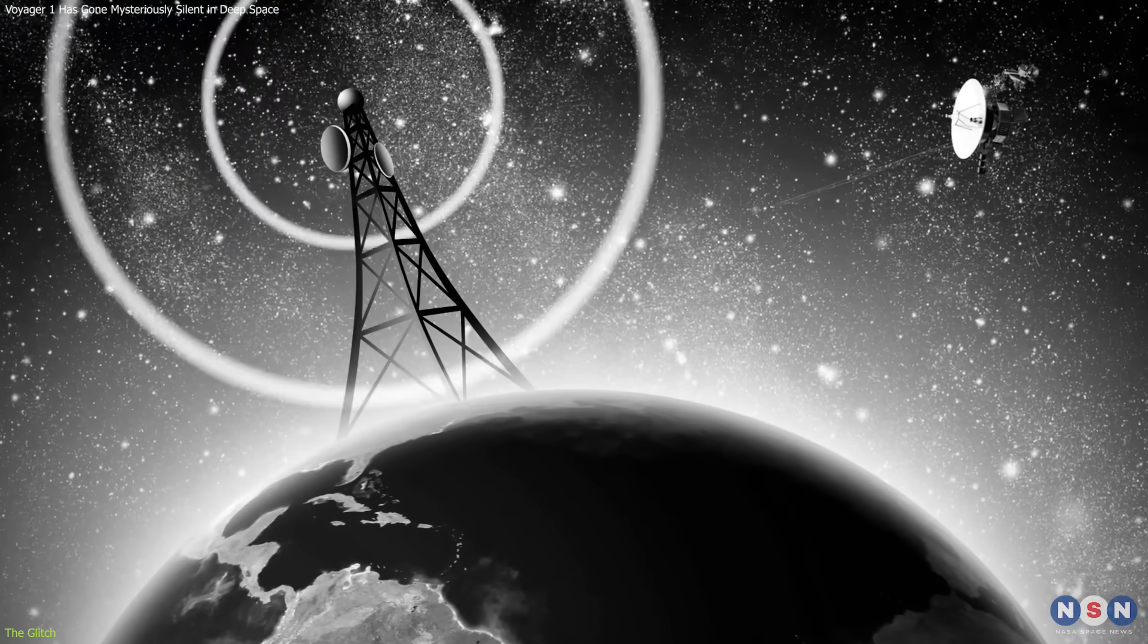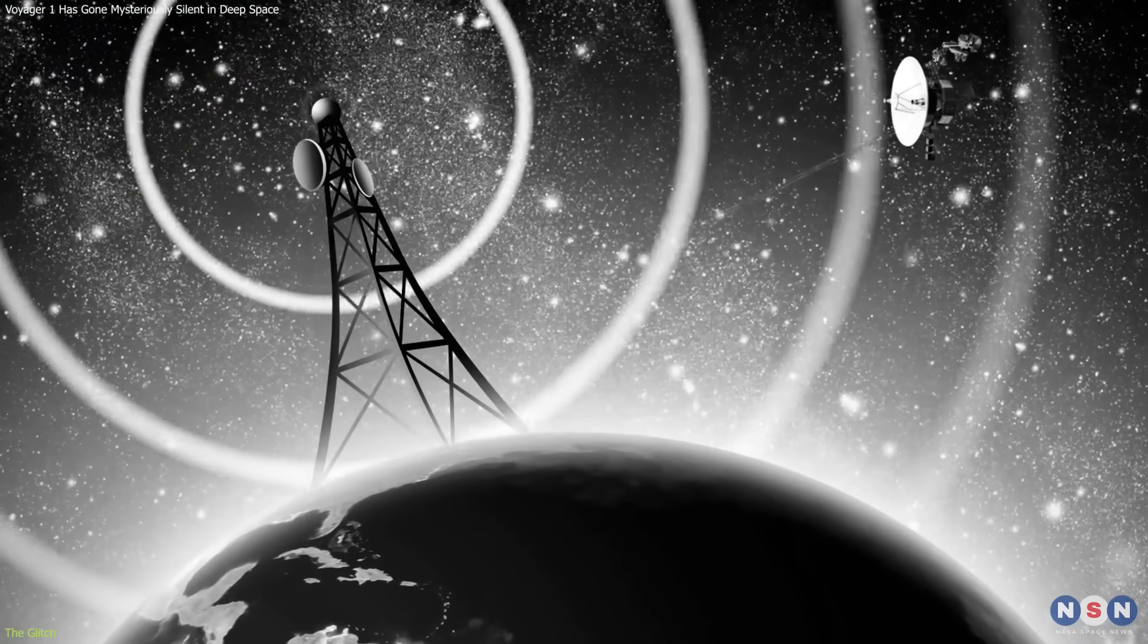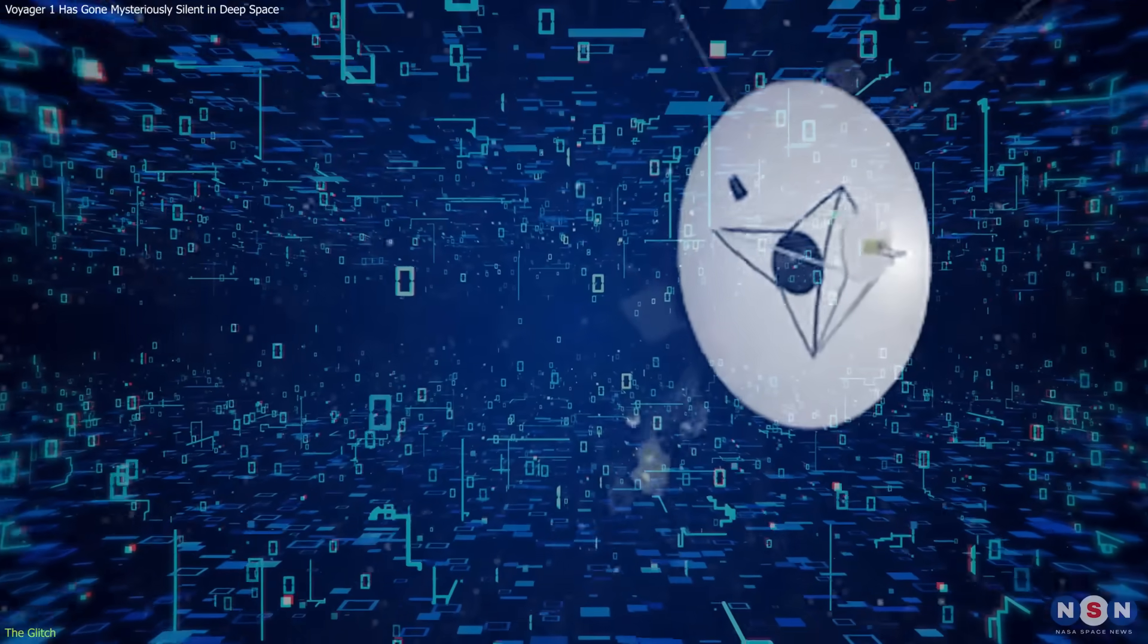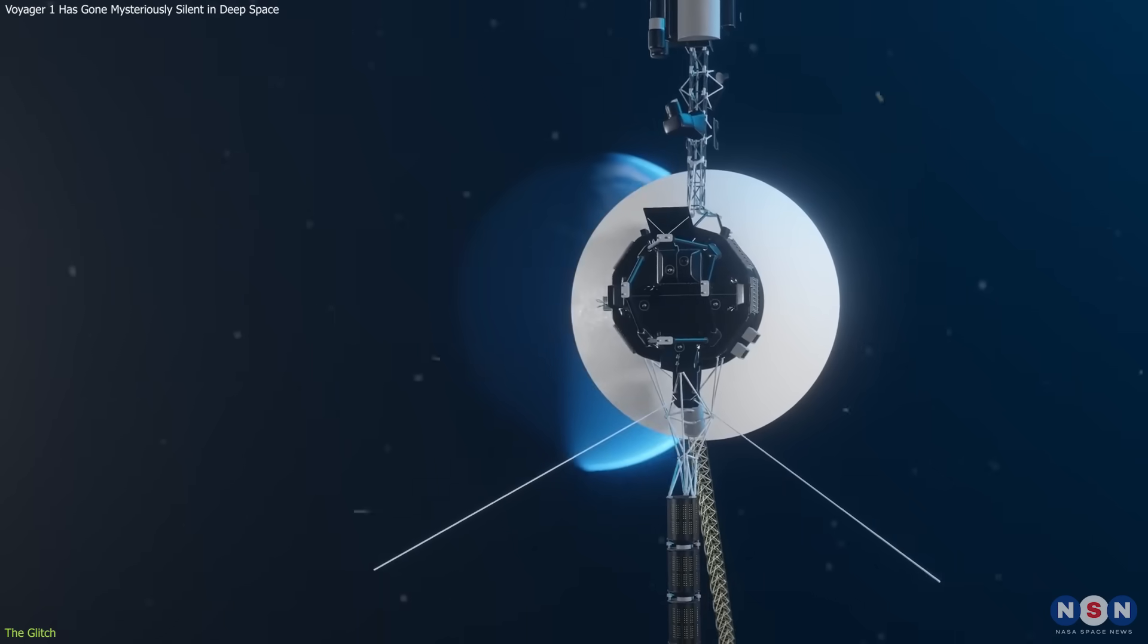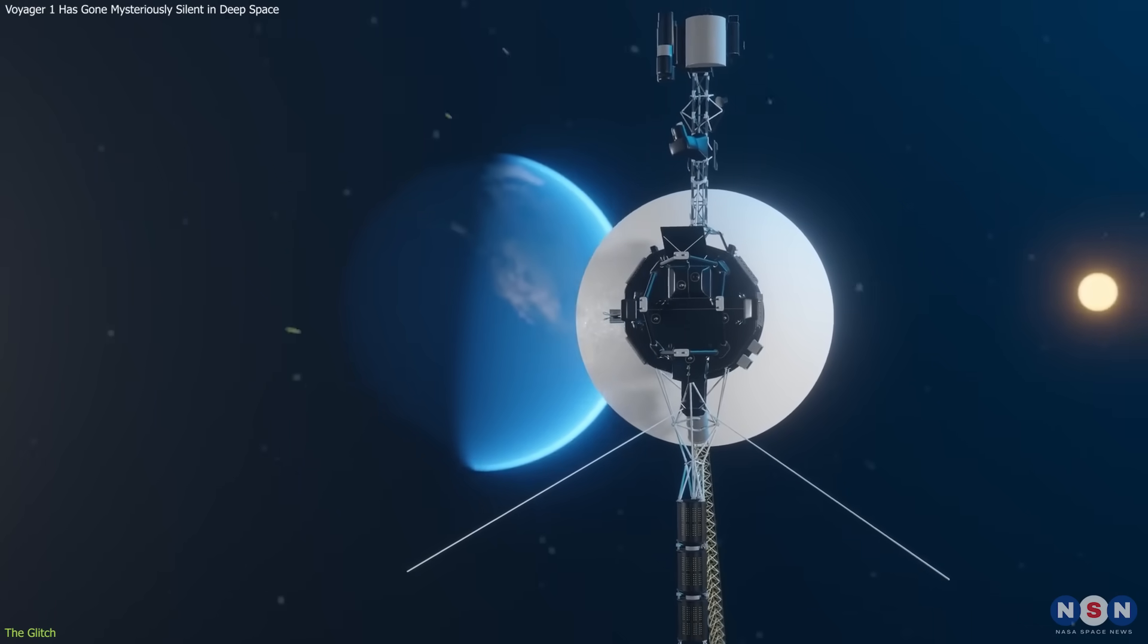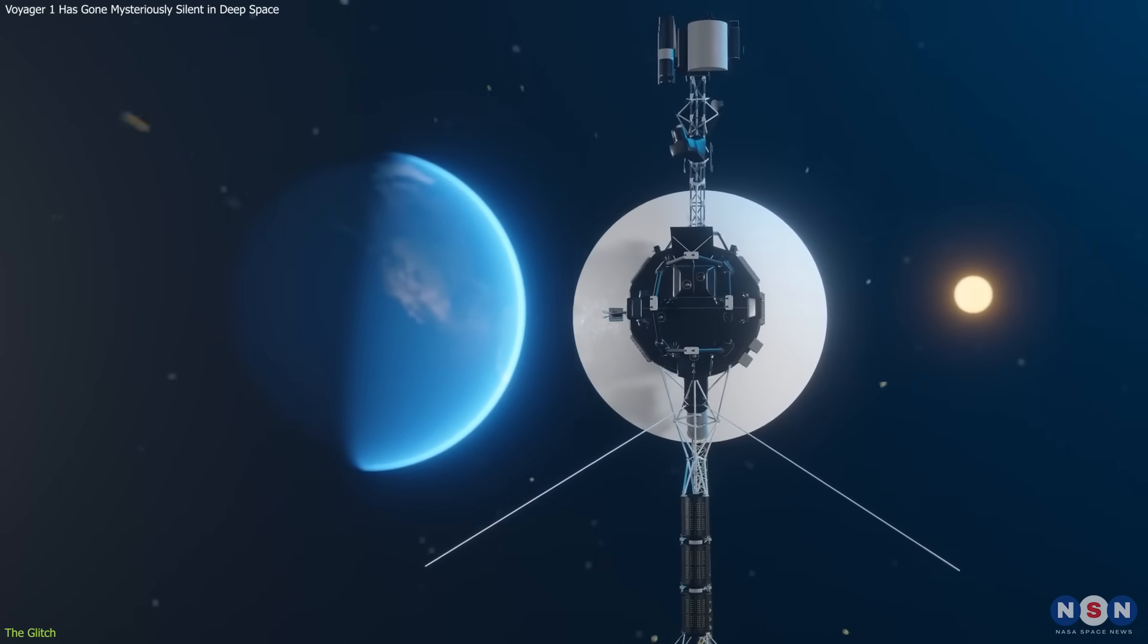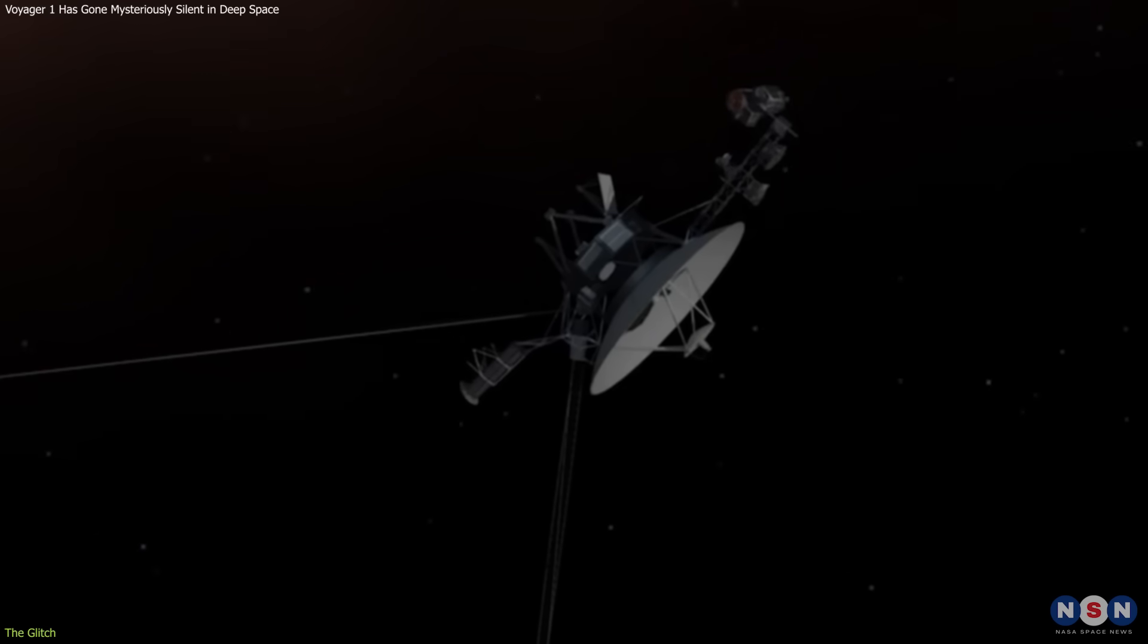This means that we cannot receive any meaningful information from Voyager 1, such as its science or engineering data. We can still send commands to Voyager 1, and it can still execute them, but it cannot tell us if it did so correctly or not.